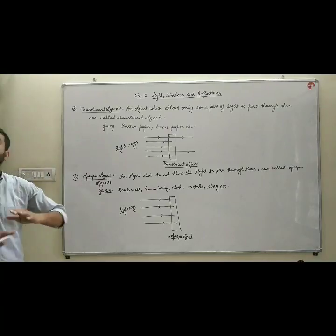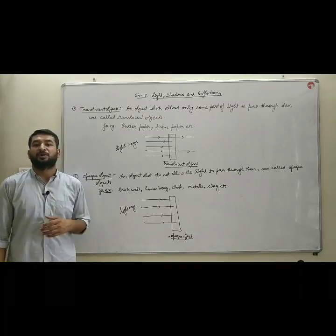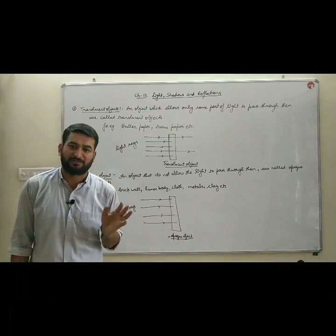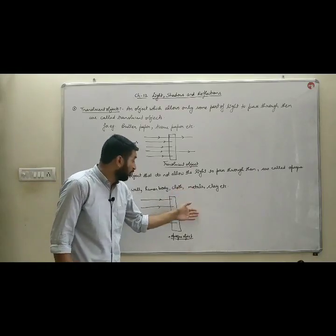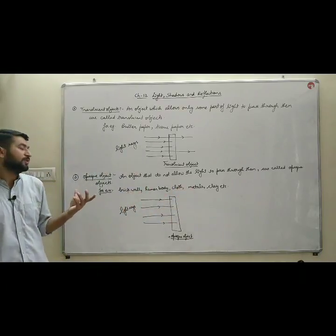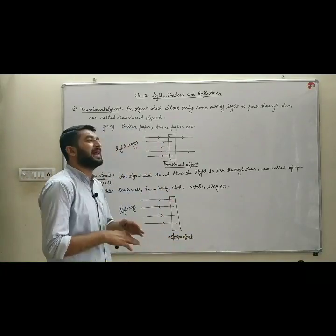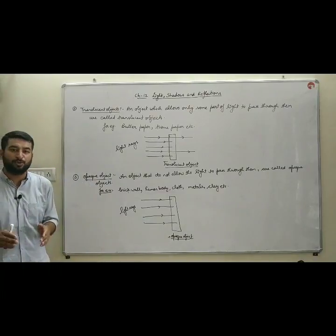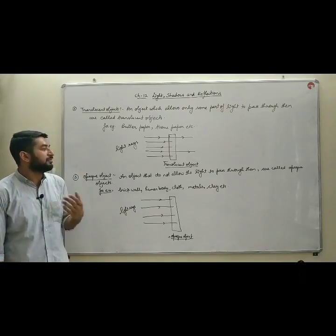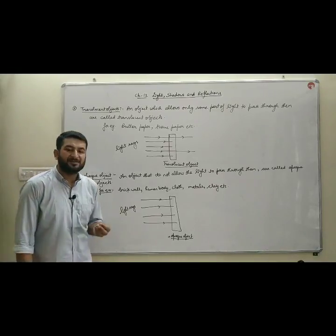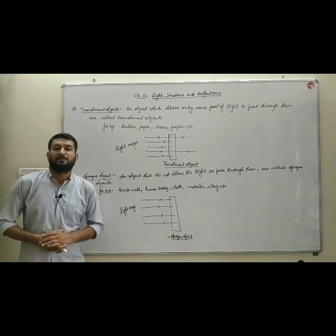The objects which do not allow the light to pass through them at all are known as opaque objects. As light cannot pass through them, we cannot see the objects behind them. Examples of opaque objects are brick walls, the human body, metals, clay, and so on.